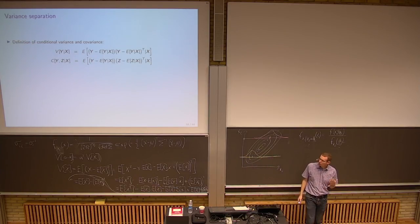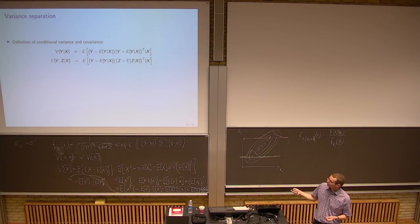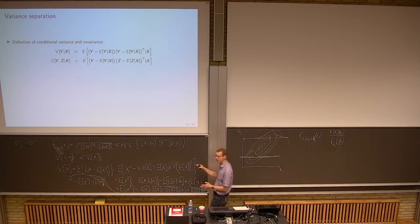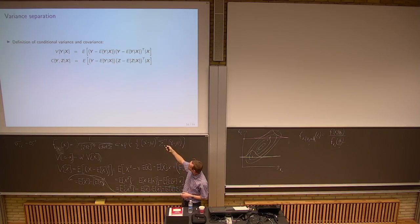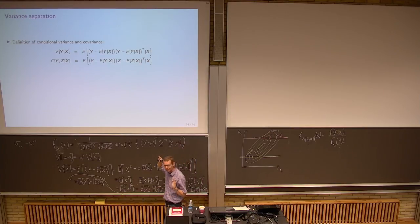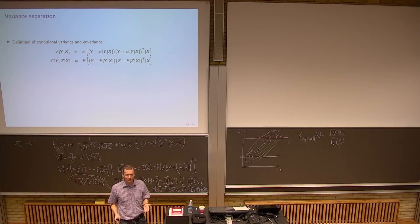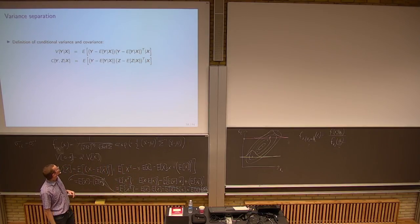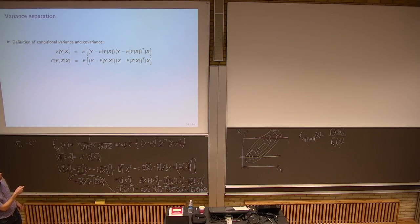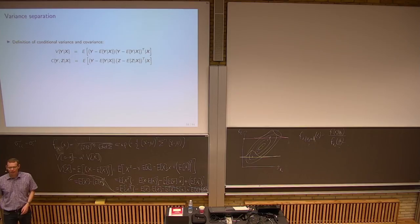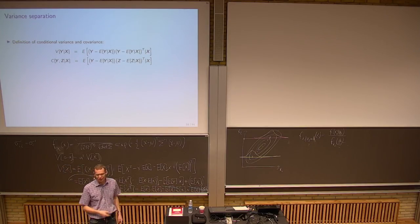You can also define conditional variance and conditional covariance. The conditional variance is defined just like the univariate variance, except every expectation is conditioned on x. The derivation is exactly the same — you just write 'condition on x' everywhere appropriate. Likewise for the covariance: you have the same structure as before but with all expectations conditioned on x.